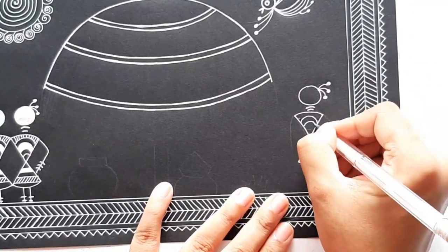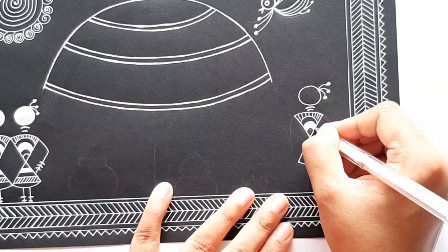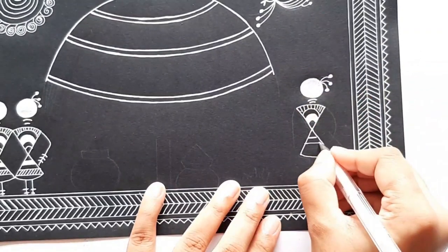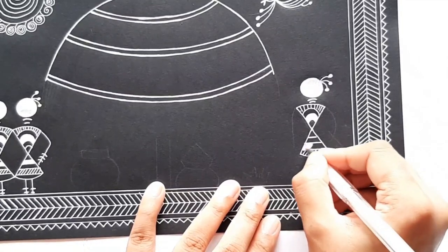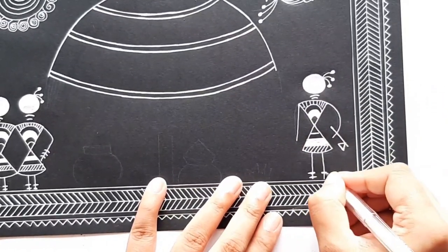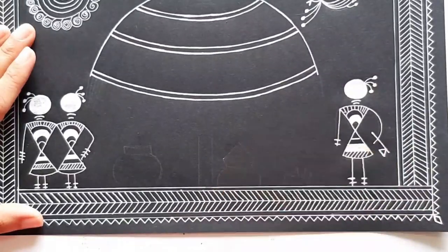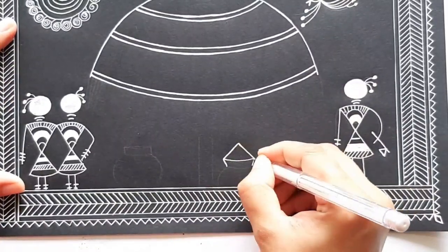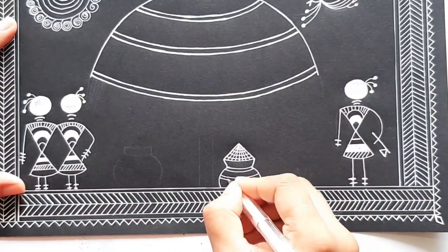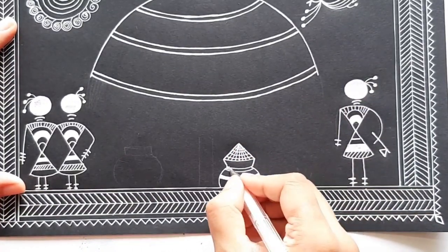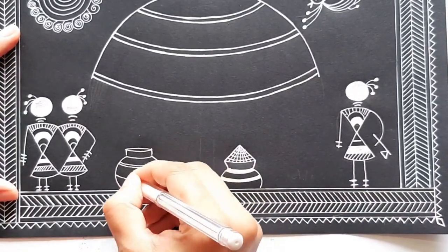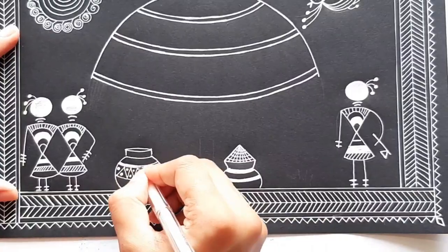I'm adding one more man with axe in his hand. I'm adding some particles here such as basket and pots. Adding some design inside the pots.